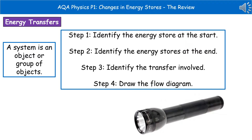There are four steps you can follow to help you get this right each time. First, identify the energy store at the beginning. Then identify the energy store at the end. Third, identify how that transfer is taking place. Then draw the flow diagram with those three bits of information.